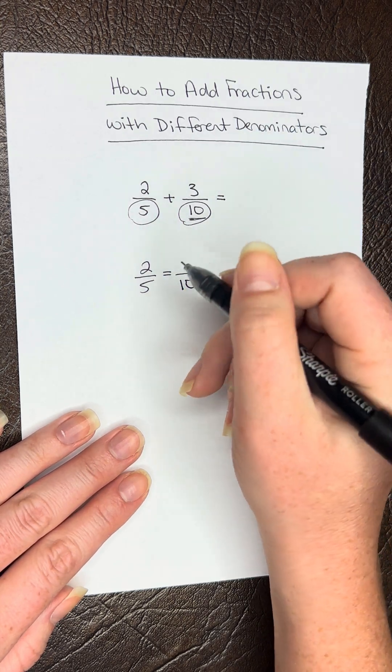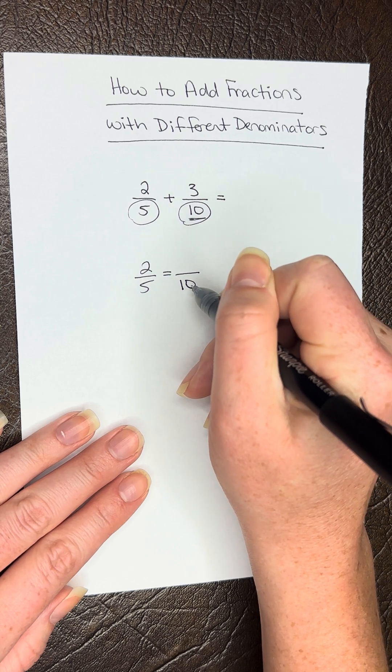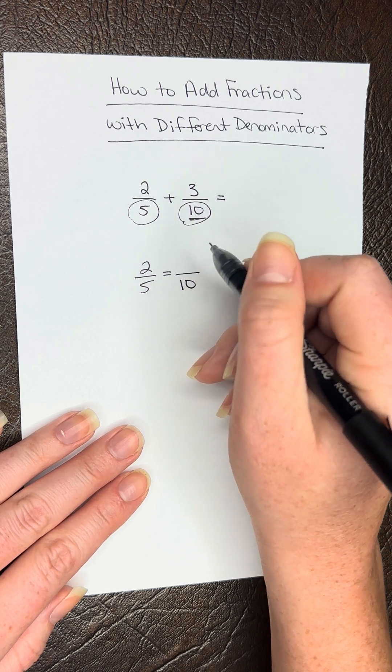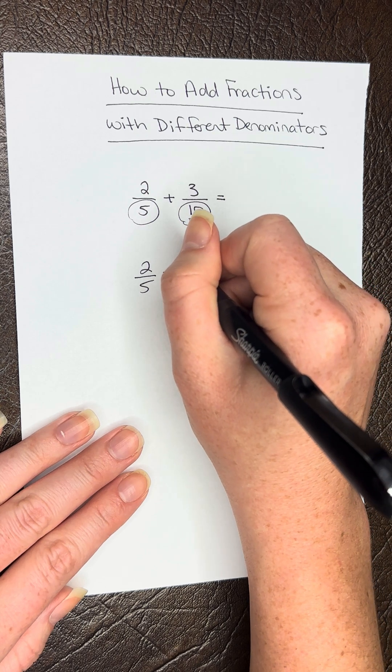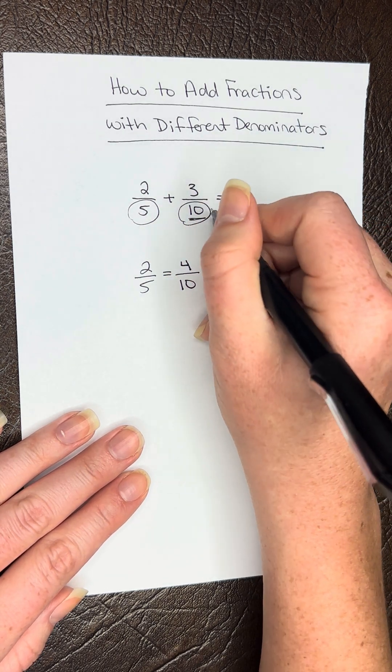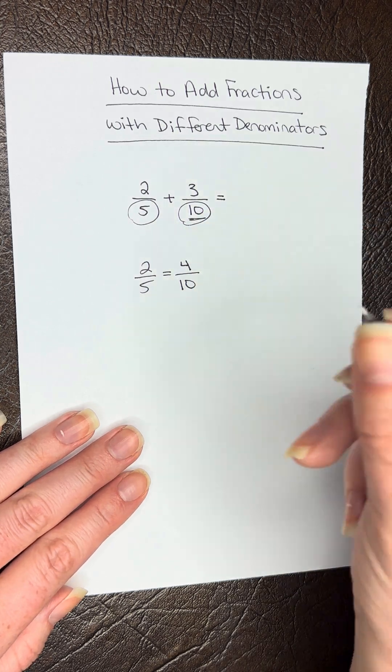We know that 5 goes into 10 two times. So we're going to do 2 times 2, and that gives us 4. So we have 4/10. The second fraction already has a denominator of 10, so that one's fine.